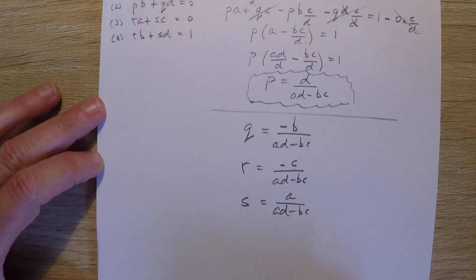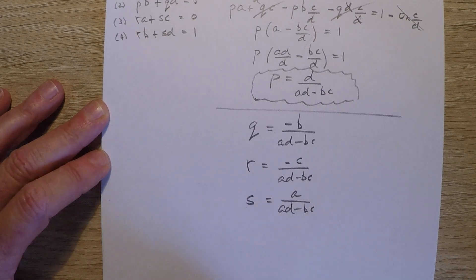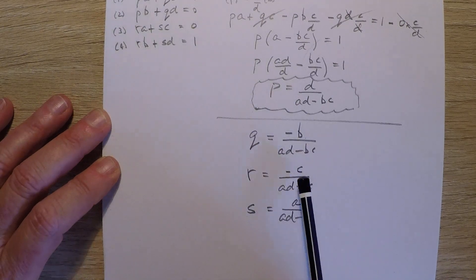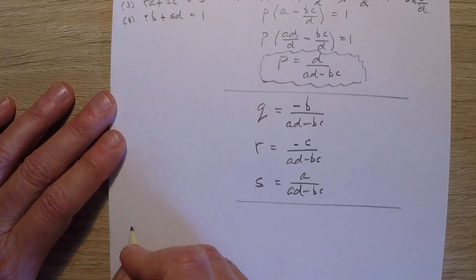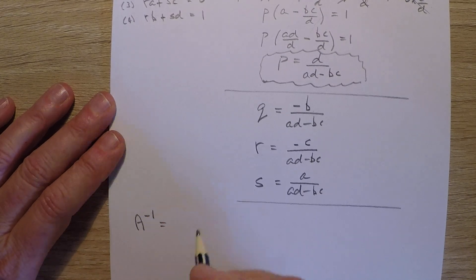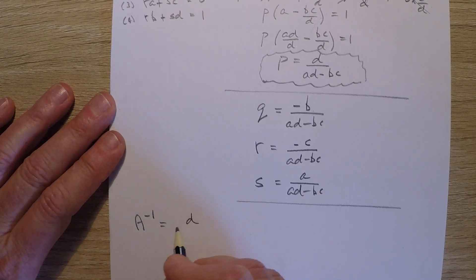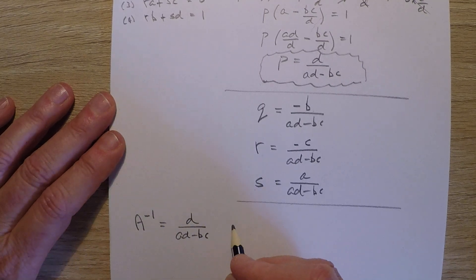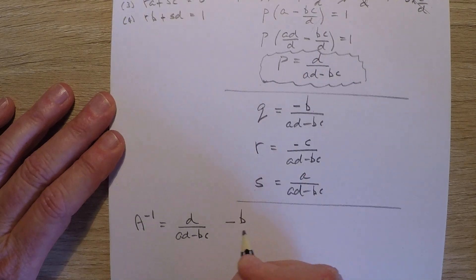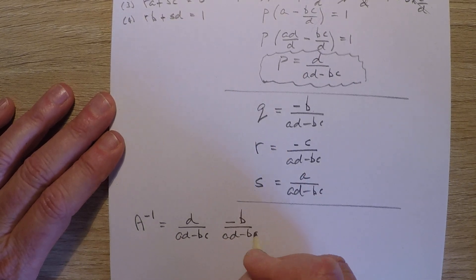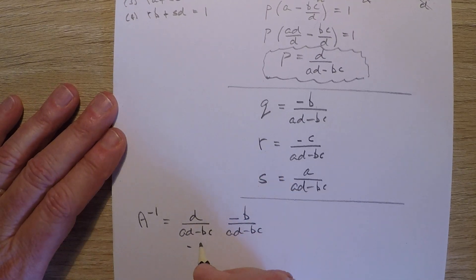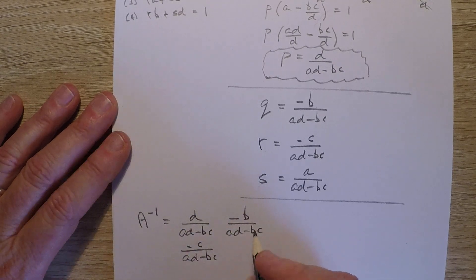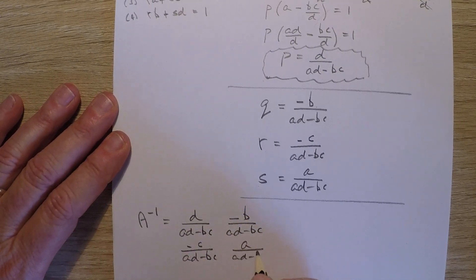So if I write the original inverse matrix, replacing P, Q, R and S with these results, we would have that the inverse of matrix A was D over AD minus BC, it was negative B over AD minus BC, it was negative C over AD minus BC, and it was A over AD minus BC.